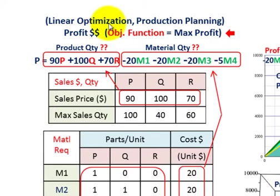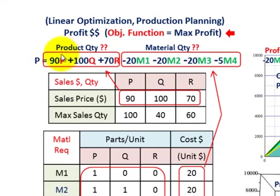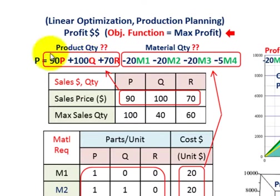What we're going to be going over here is a linear optimization problem, and really it's to do with production planning. We're going to have three different products that we're going to be manufacturing: product P, Q, and R. What we want to do is maximize the profit on those products based on this linear optimization.